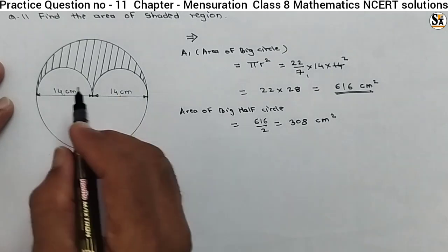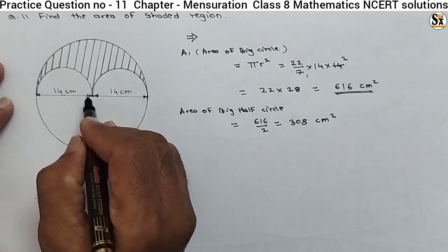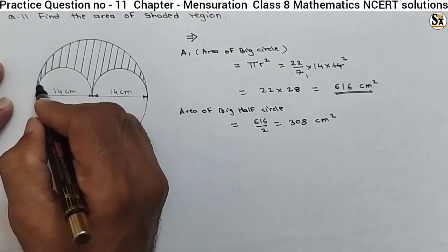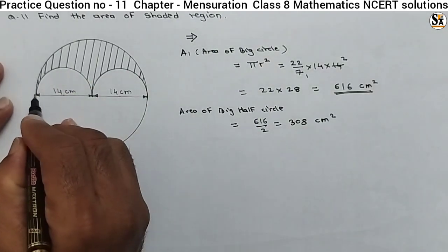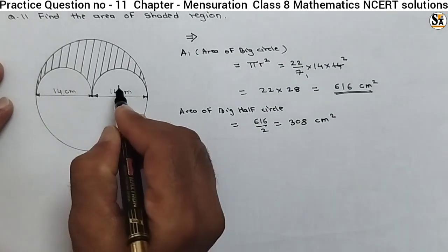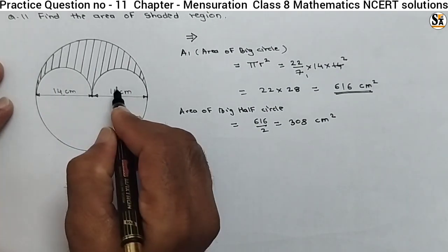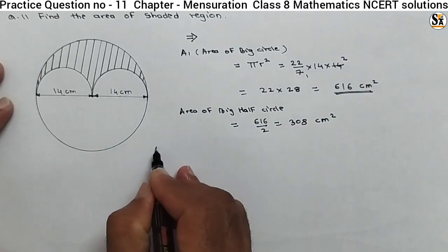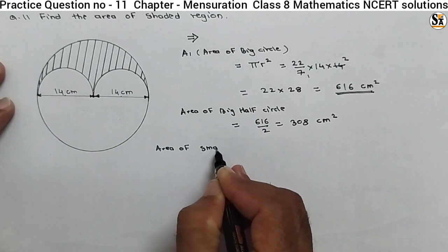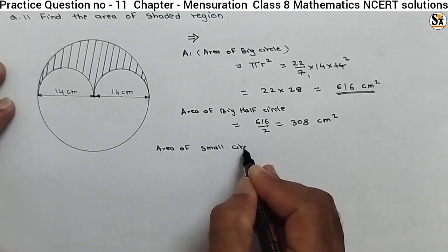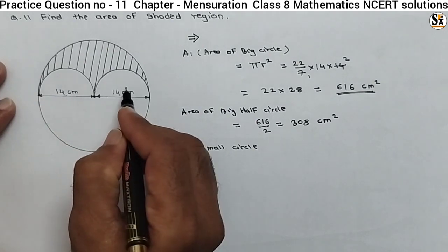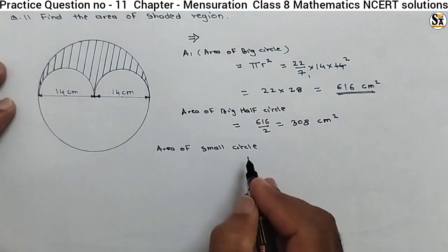Now, if we subtract the area of this small half circle and this half circle from this figure, we will get the required area of the shaded portion. We need to calculate the area of the small circle. This is one half circle and this is another half circle. Half plus half means a complete whole circle.